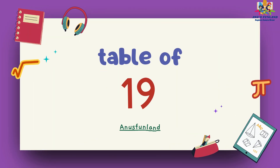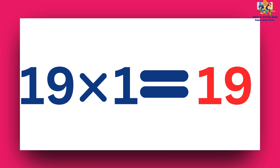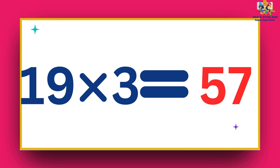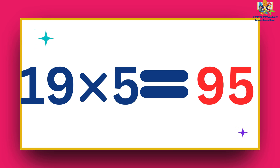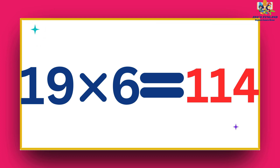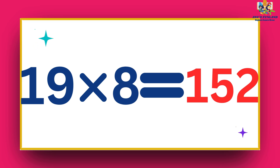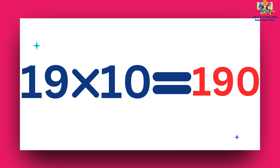Now we will learn table of 19. 19 ones are 19. 19 twos are 38. 19 threes are 57. 19 fours are 76. 19 fives are 95. 19 sixes are 114. 19 sevens are 133. 19 eights are 152. 19 nines are 171. 19 tens are 190.